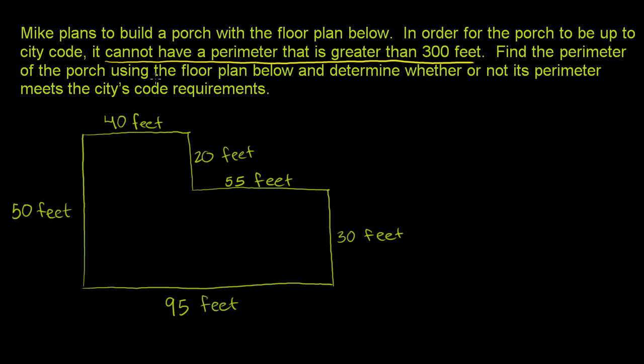Find the perimeter of the porch using the floor plan below and determine whether or not its perimeter meets the city's code requirements. So we need to find the perimeter of this porch. As a reminder, the perimeter is the distance around the object, or another way of thinking about it is the sum of the lengths of the sides of the object.